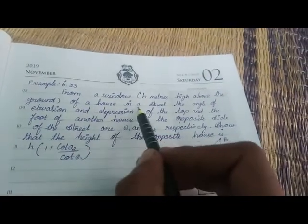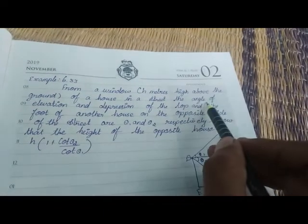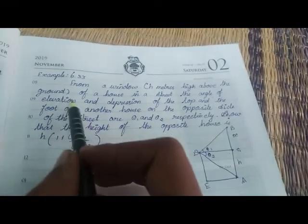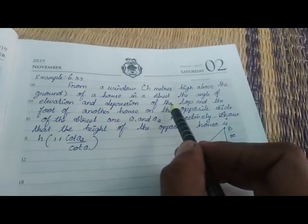In the trigonometry example 6.33: From a window height meters high above the ground of a house in a street,